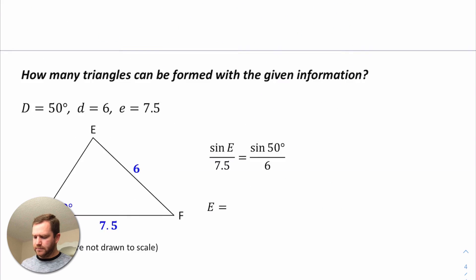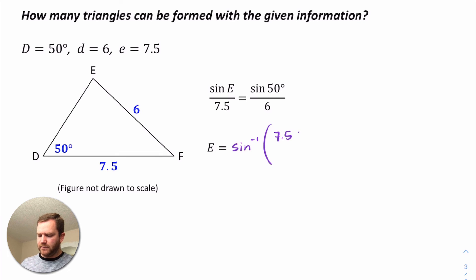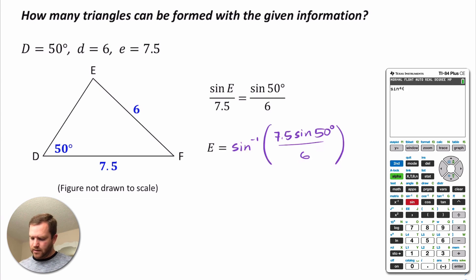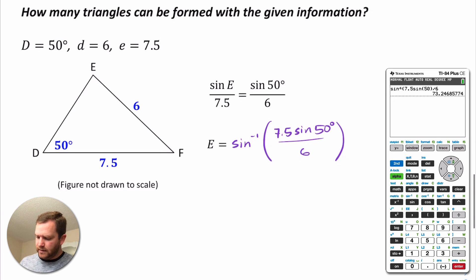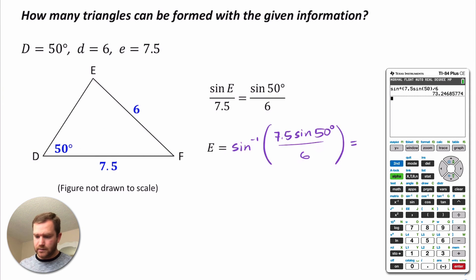Let's look at another situation. We have angle D is 50 degrees, side D is 6, and side E is 7.5. Again we want to find the measure of angle E. To do that, multiply by 7.5 and take the inverse sine: inverse sine of 7.5 times the sine of 50 degrees, all divided by 6. Throwing this into the calculator, we get that this is about 73.2 degrees.